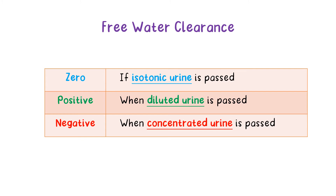Note that the osmolarity of any fluid depends on the concentration of ions present in it. If the concentration of solutes is equal, it is an isotonic solution. If the concentration of solutes is less, it is a hypotonic solution. This means diluted urine is hypotonic while concentrated urine is hypertonic.